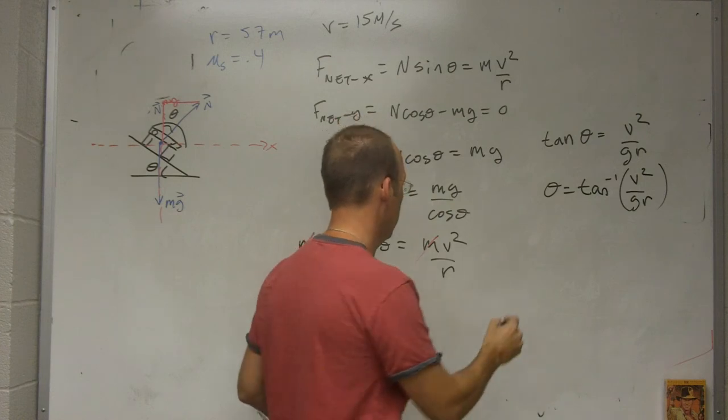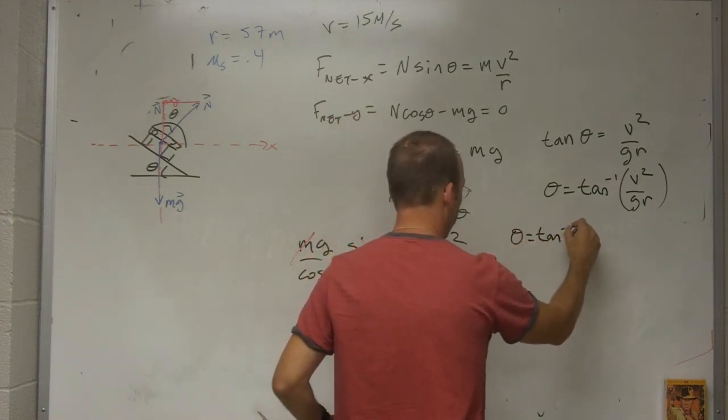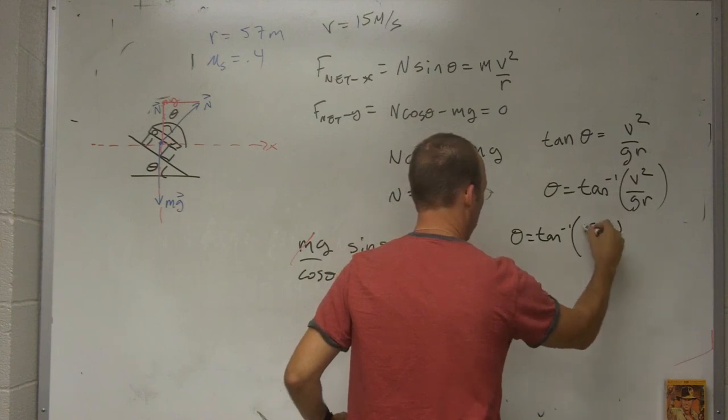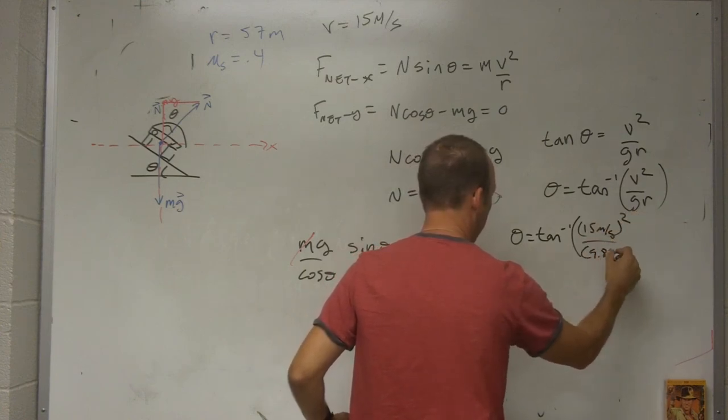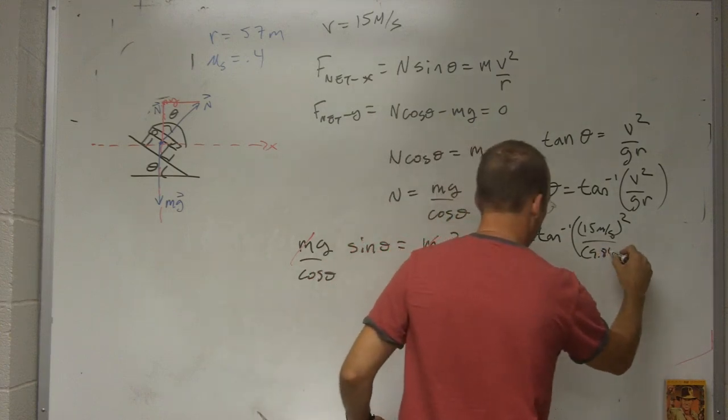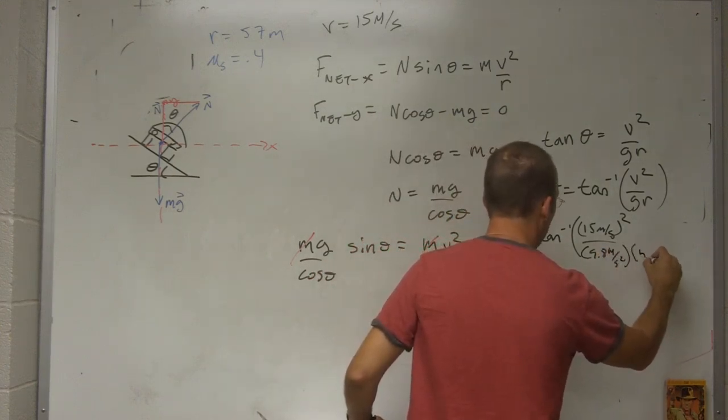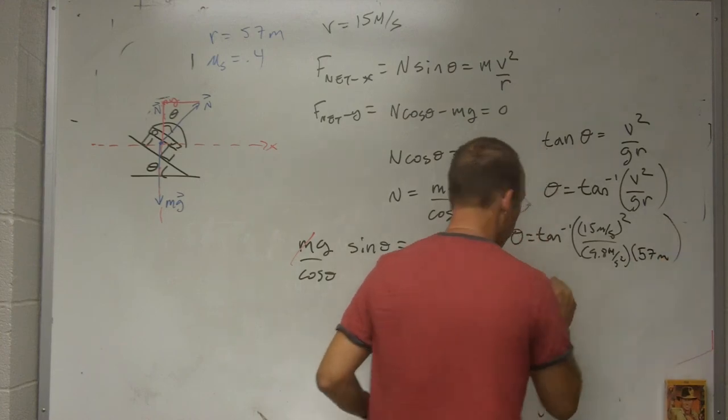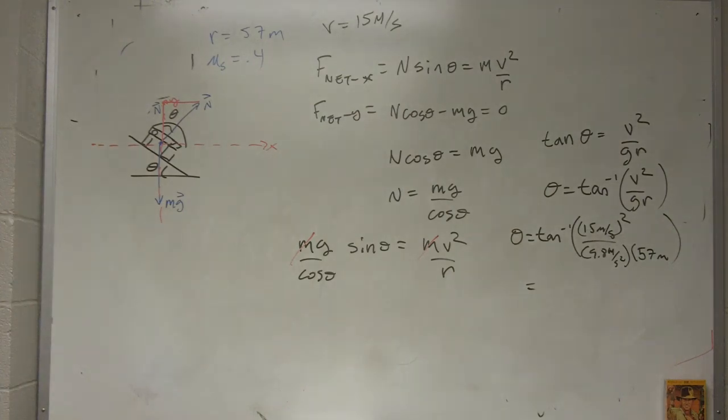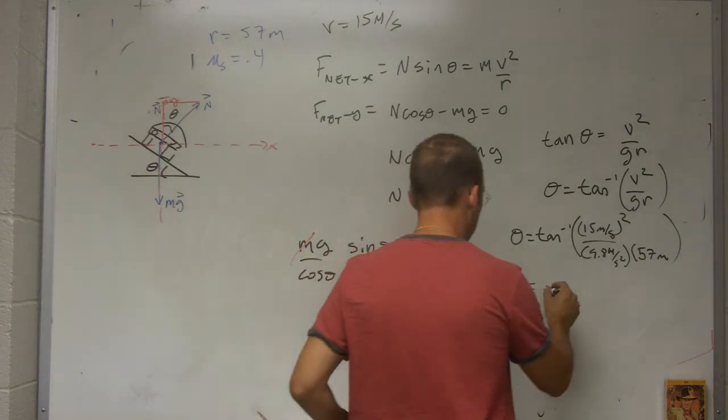So I know v is 15. So theta equals tangent inverse 15 meters per second squared over 9.8 newtons per kilogram or meters per second squared. They're equivalent times 57 meters. And so what angle does that give me? Let's see. 15 squared. I get 21.9 degrees. So approximately 30 degrees.